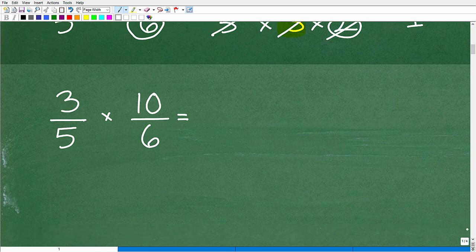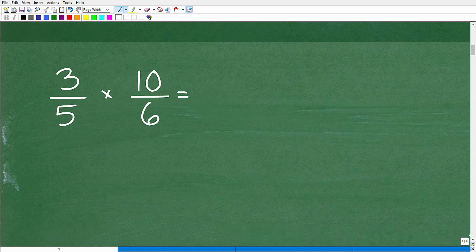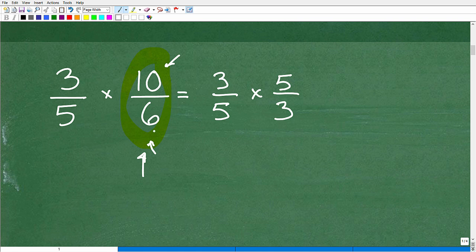So here we have 3/5 times 10/6. Another thing that you want to be doing when you're dealing with fractions is right off the bat, always look to simplify your fraction. So I'm looking at this, I'm like, hmm, 10 over 6, can I reduce this fraction? Can I make this a little bit like an easier fraction to work with? Yes, I can. So let's rewrite this fraction as 3/5 times, now how can I reduce this fraction? Well, 2 goes into 10 five times and 2 goes into 6 three times. So I can simplify or reduce this fraction into the fraction of 5/3.